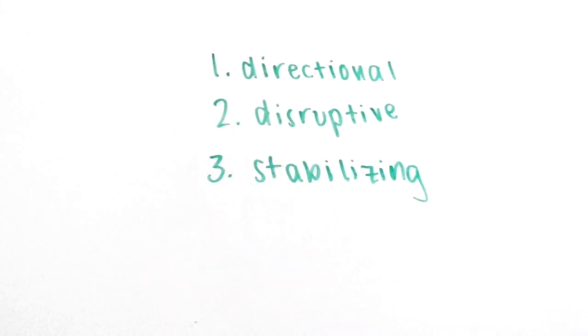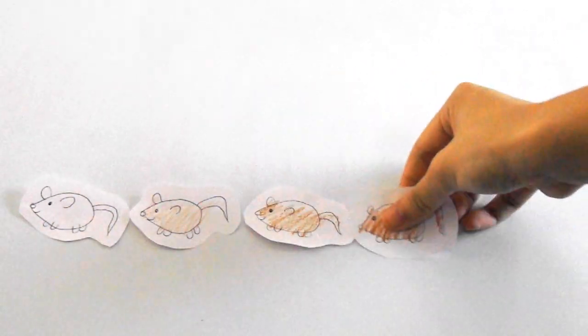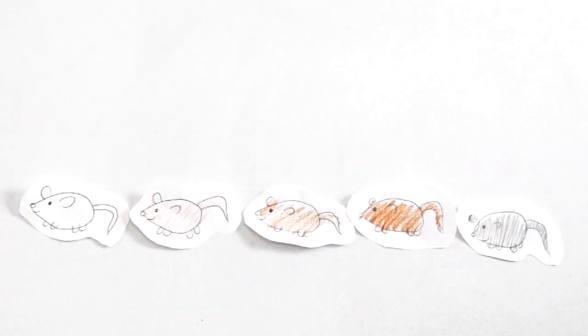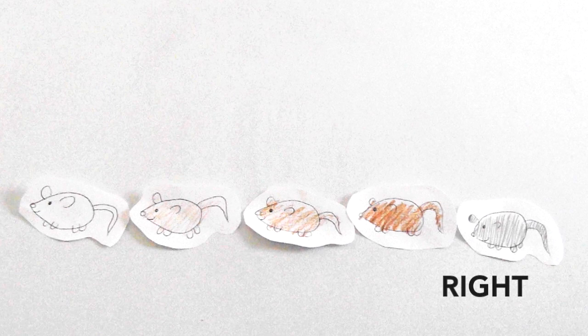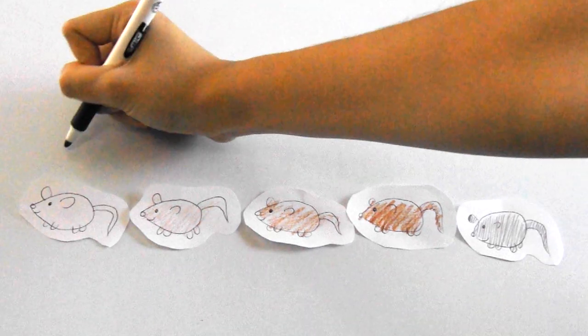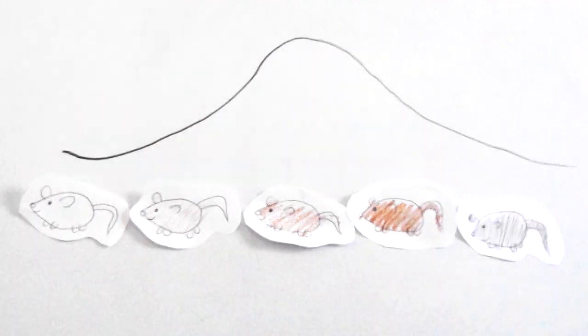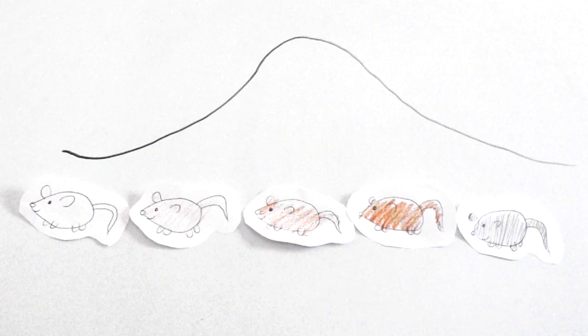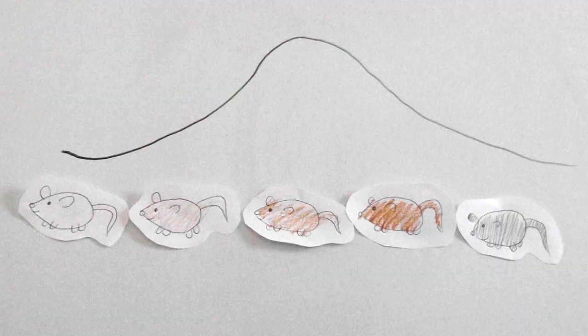Let's say we have this graph set up and along the bottom we place different colors of mice. Over on this side we have the light colored mice and going to the right the mice get darker and darker. Here's your normal distribution curve. Most of the mice have intermediate phenotypes and very little have extreme phenotypes.